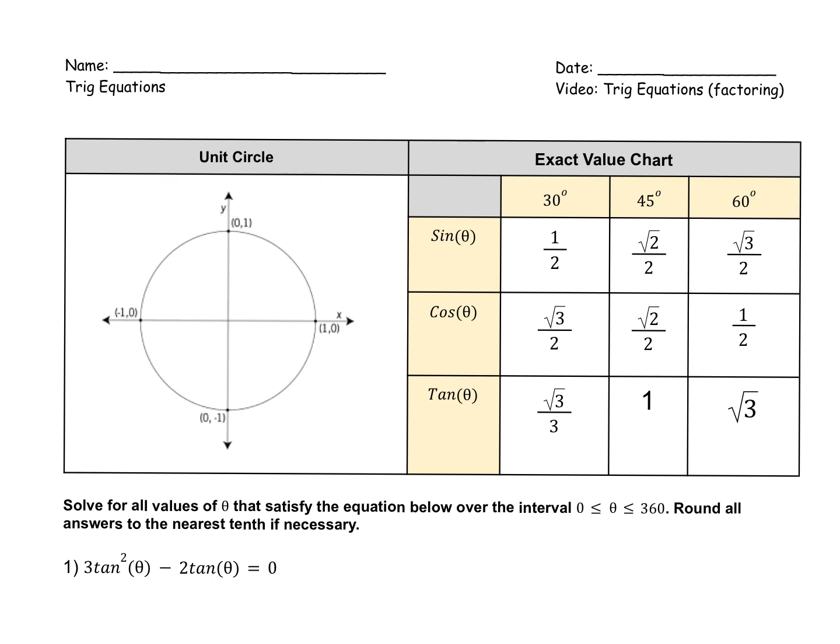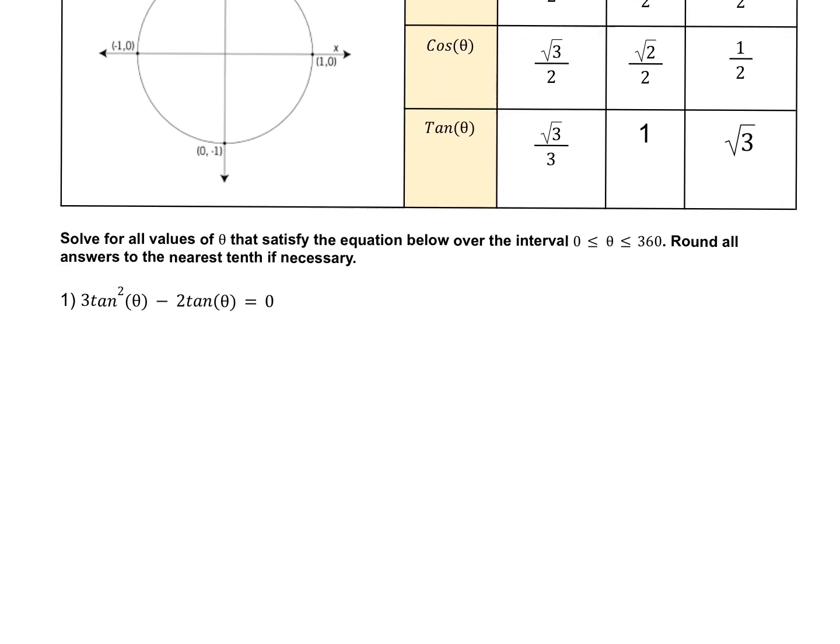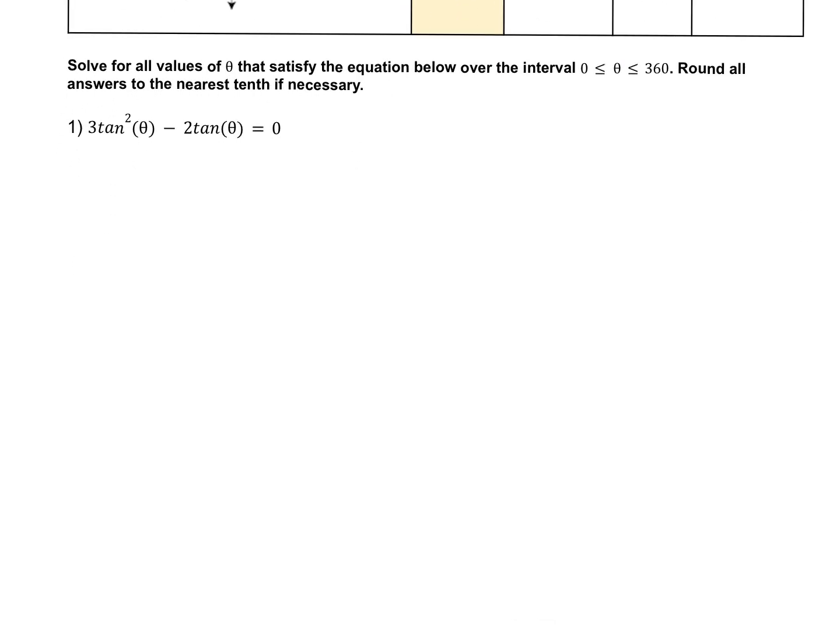So as always, I have the unit circle here and the exact value chart just in case we need it. Let's take a look at example number one. It says solve for all values of theta that satisfy the equation below over the interval from 0 to 360, rounding all answers to the nearest tenth if necessary. Because we have the same trig function, tangent and tangent, we can let x equal tan of theta, solve the equation with x's and then put the tangent back in.